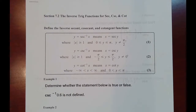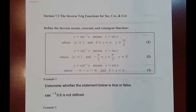This is the lecture video for MAC 1114 Trigonometry. We're in section 7.2, where we will look at the inverse of the trig functions secant, cosecant, and cotangent. We start off, just like we did in the last section when we were doing inverses of cosine, sine, and tangent, by looking at the restrictions that allow the inverse to be evaluated.